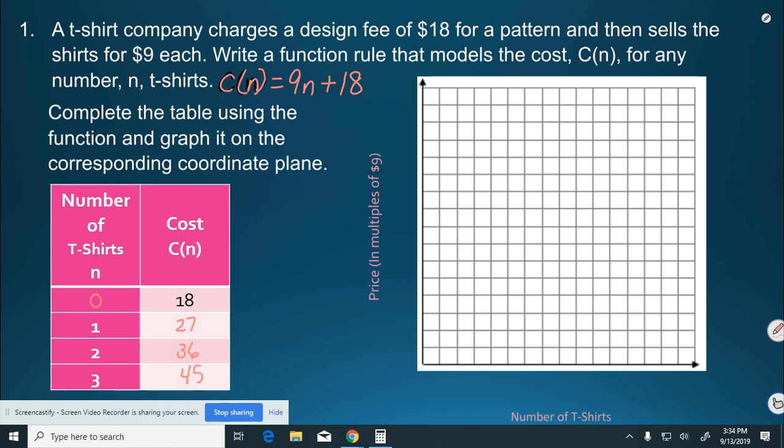Now we want to figure out our graph. I've set up the axes for you. Our price is going to be in multiples of 9. So, I'm going to do 18 for every other box. So, 18, 36 plus 18 more is going to be 54 plus 18 more is going to be 72 plus 18 more is going to be 90 plus 18 more.